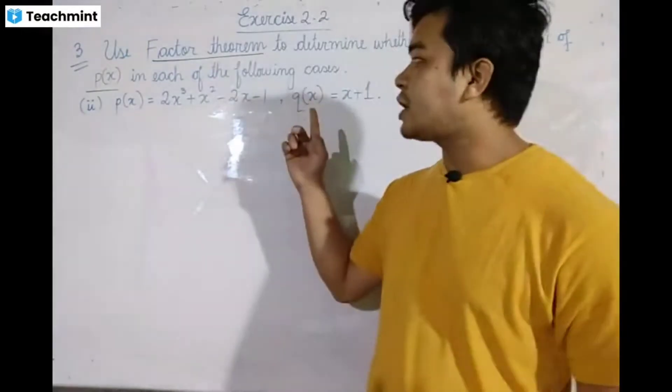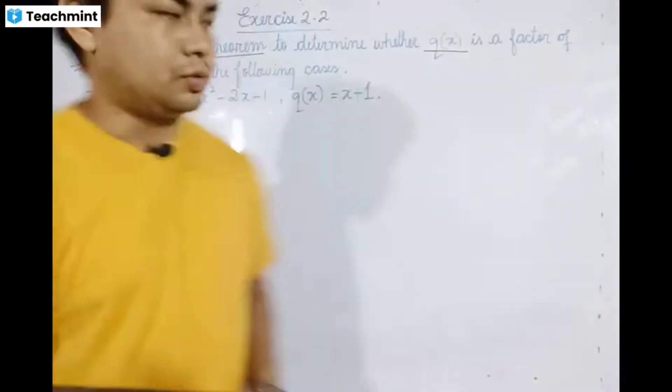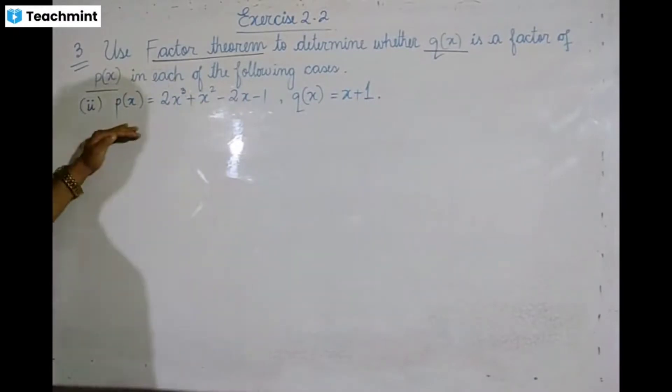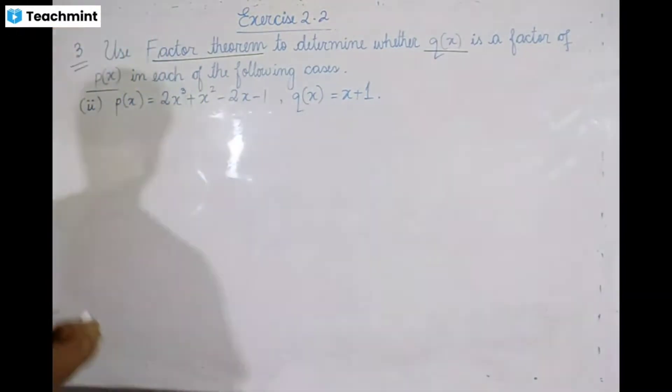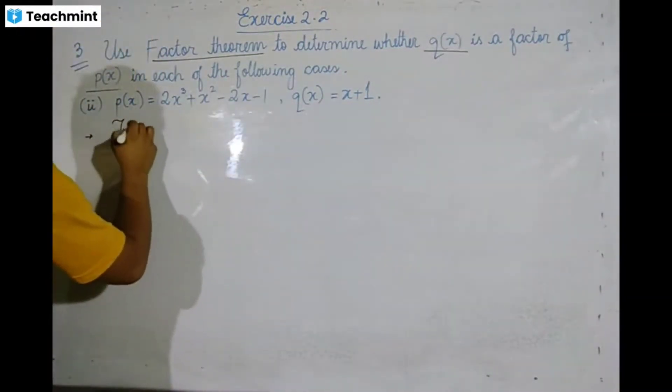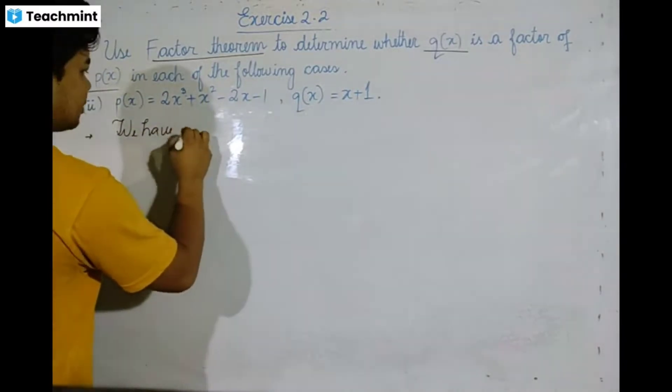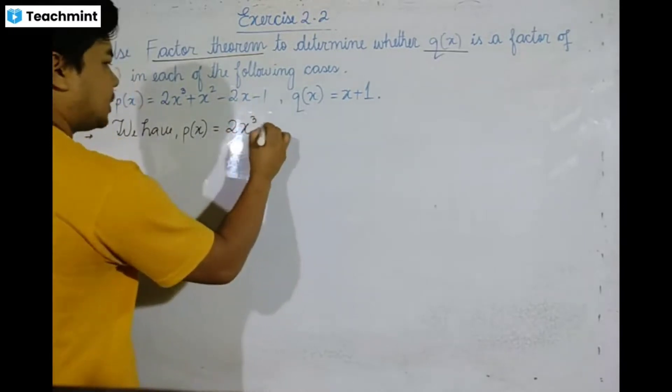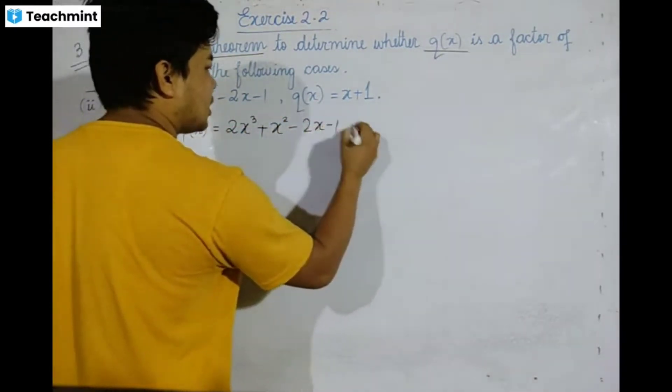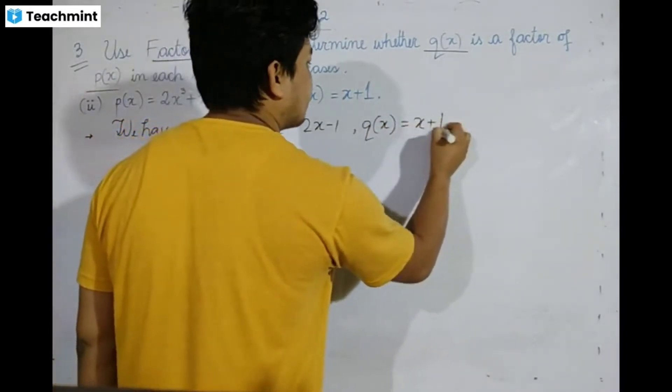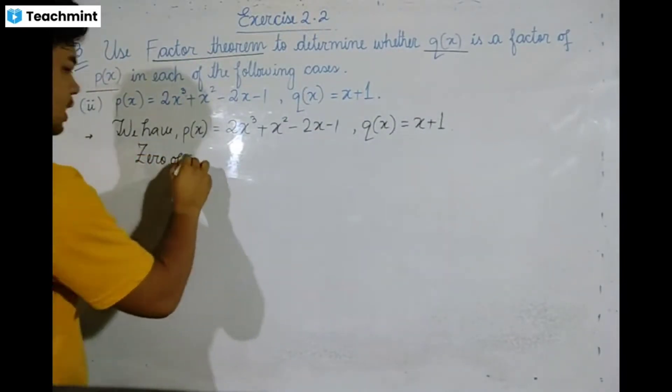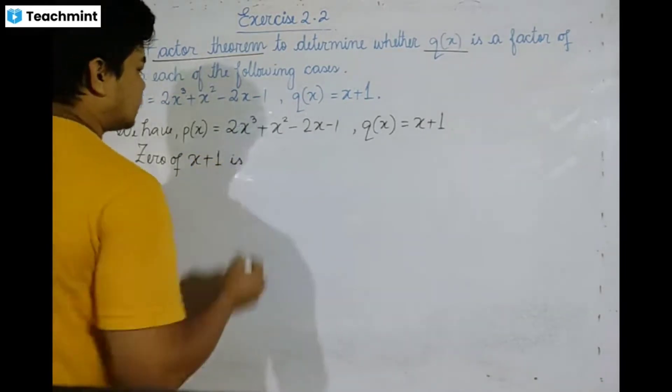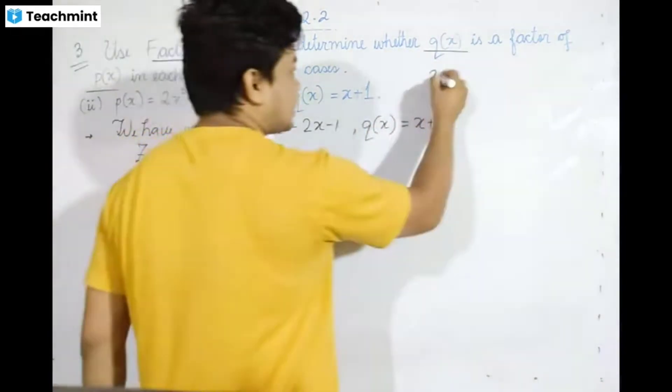Exercise 2.2, question 3. We have P(x) equals 2x³ + x² - 2x - 1, and Q(x) equals x + 1. If x + 1 equals 0, then x equals -1.